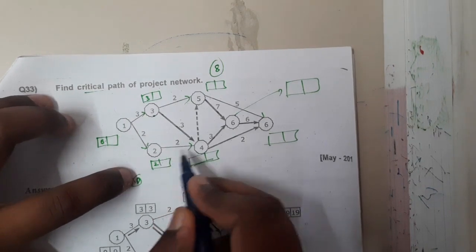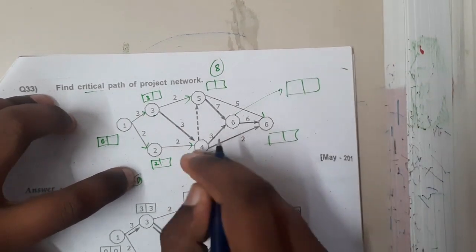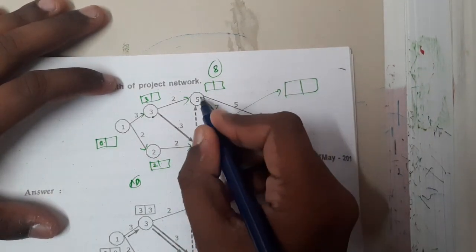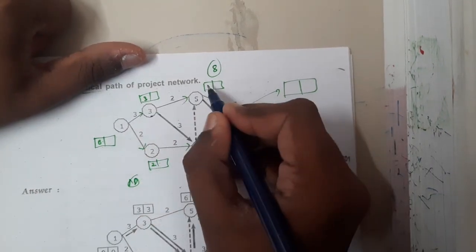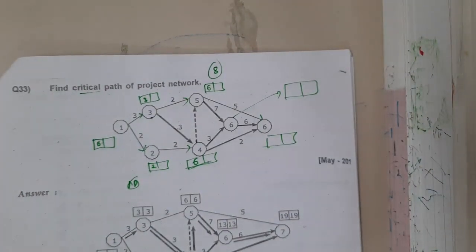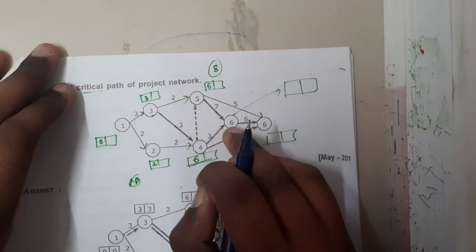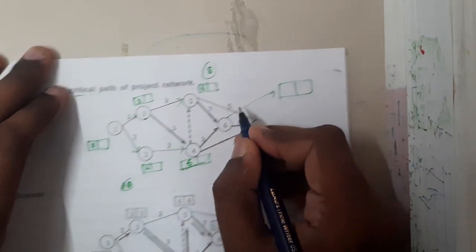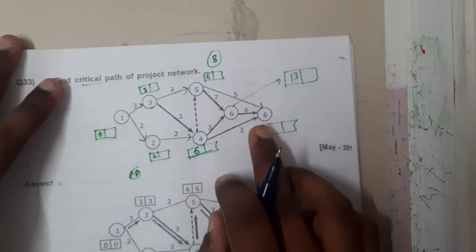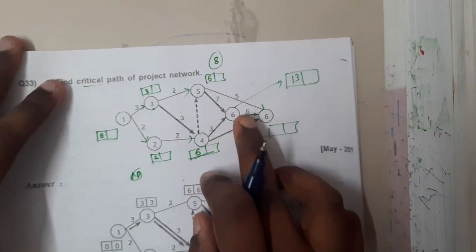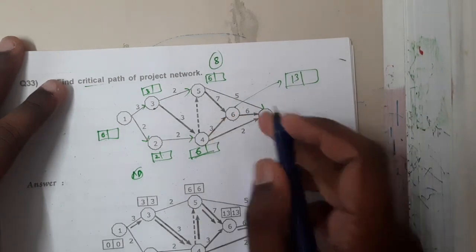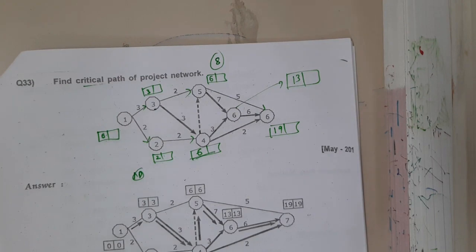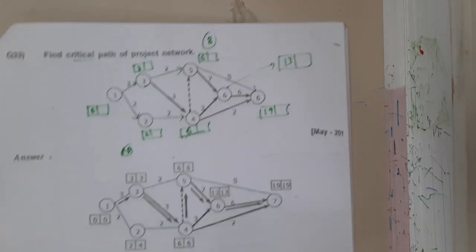For a node with two different paths, we calculate three plus three equals six, and two plus two equals four. While moving forward we take the maximum, so we select six. Continuing forward, one path gives free of cost so it remains six, while another gives five; maximum is six. For the next node, two paths give six plus seven equals thirteen, or six plus three — obviously thirteen is more. Finally, thirteen plus six, six plus five, or four plus two — thirteen plus six equals nineteen is the maximum.